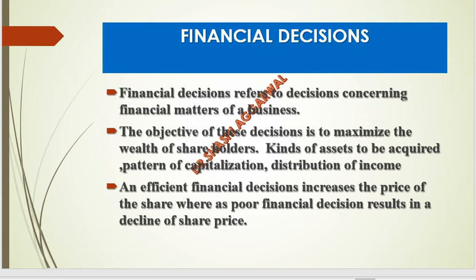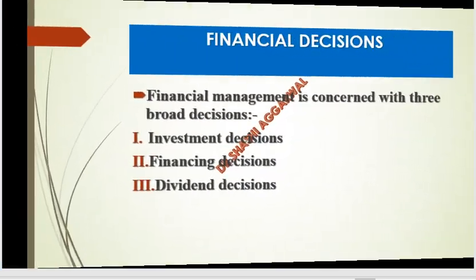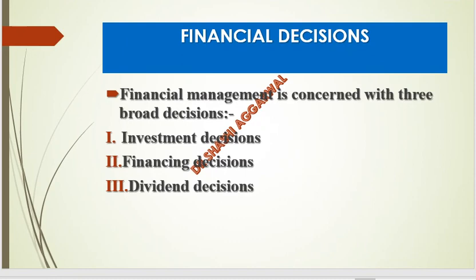The objective of financial decisions is to maximize the shareholders' wealth. But if it is a poor financial decision, the share price will decrease and the shareholders' wealth will decrease. We can classify three decisions: investment decision, financing decision, and dividend decision. We are going to understand each decision one by one, and we can also show this graphically.